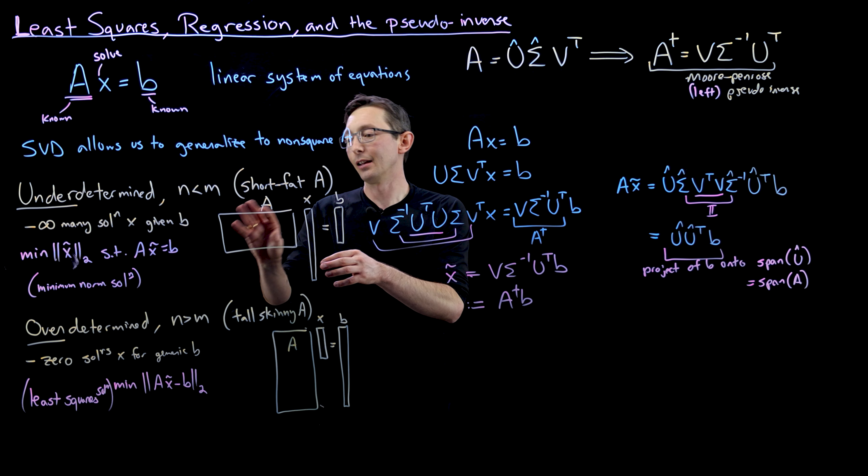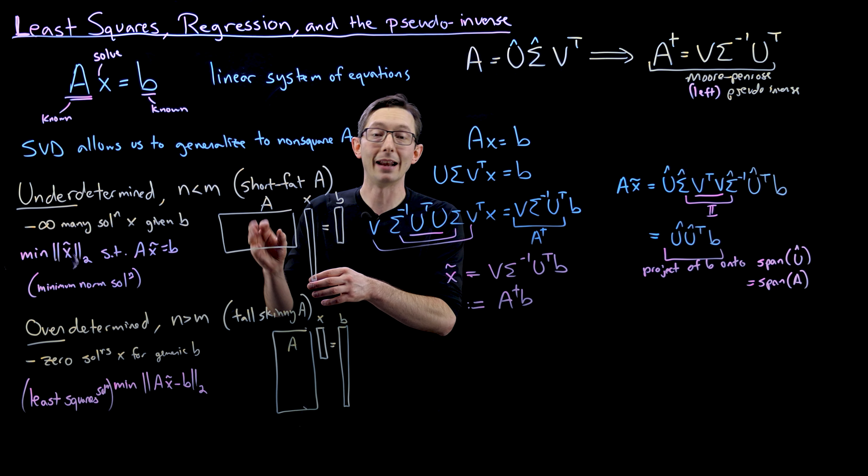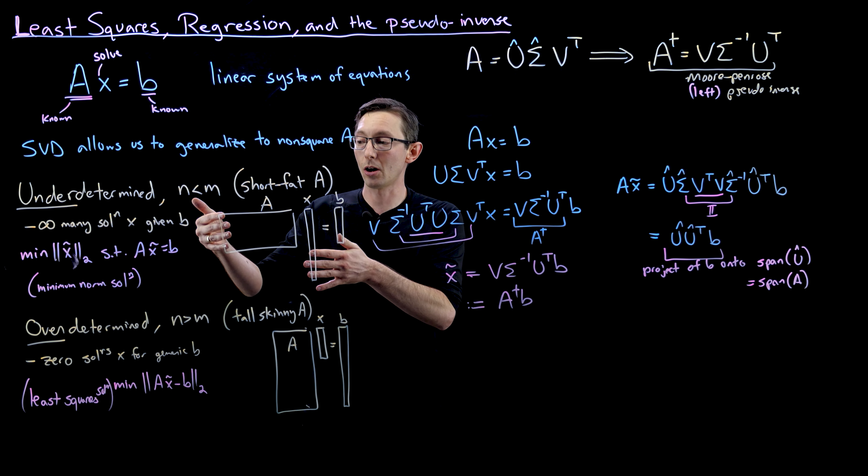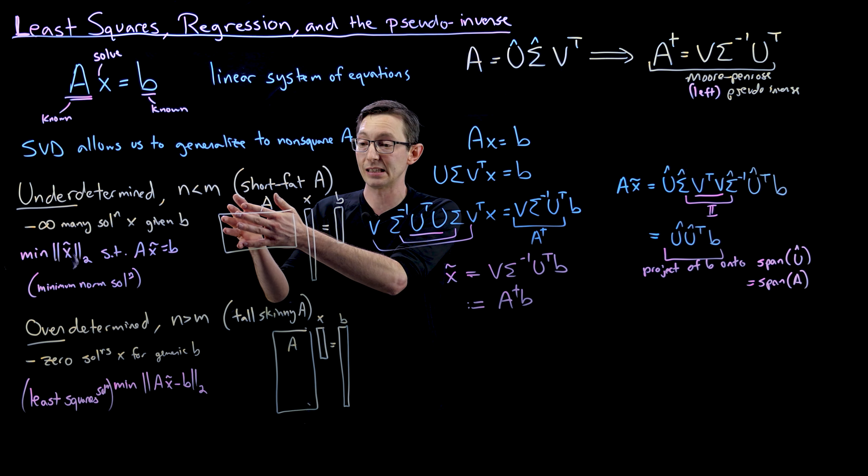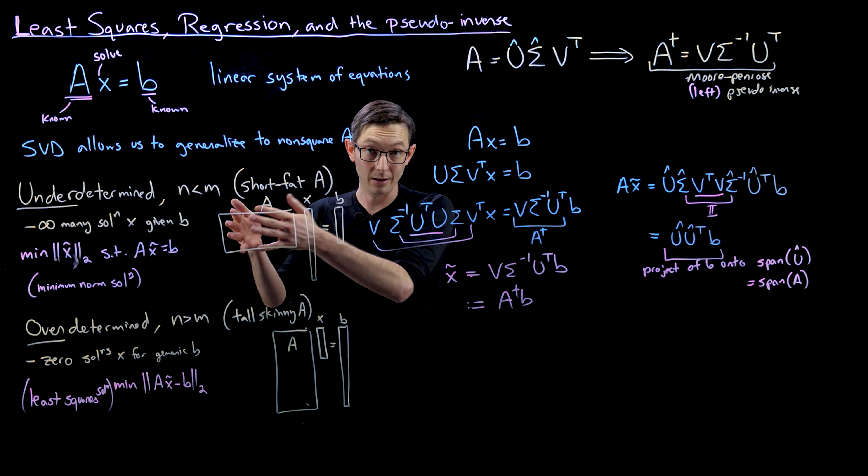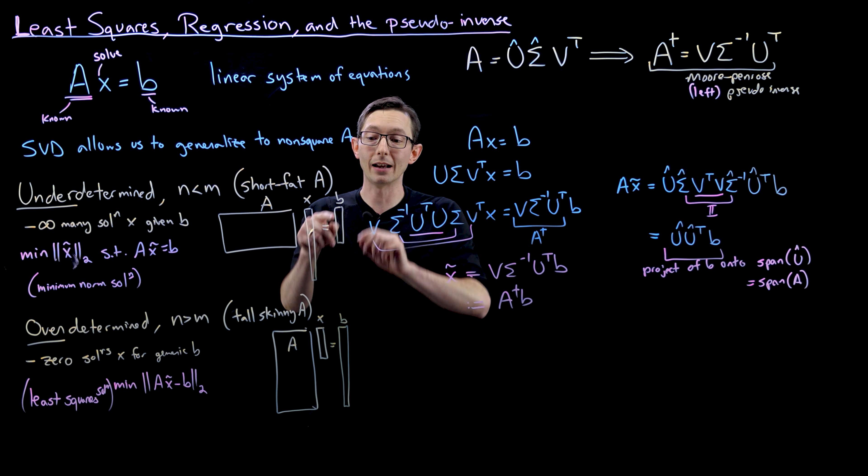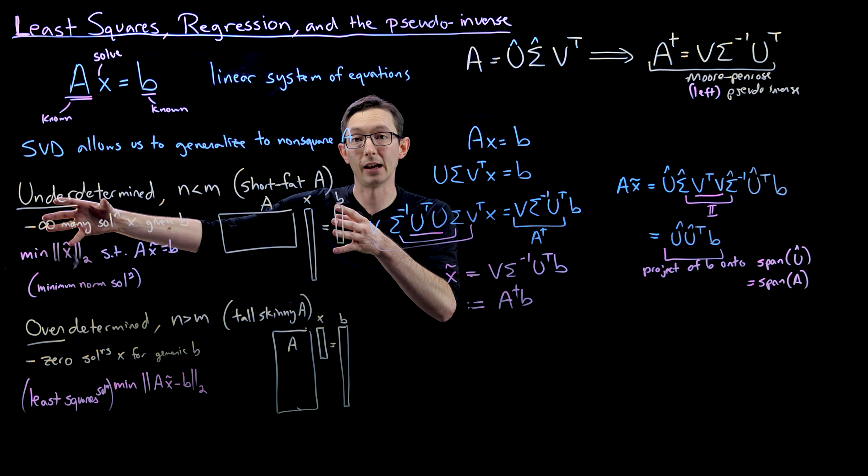And here, unless I pick a really bad A, this will actually be over-complete. There's more than enough columns in A to span all of RN. And so it's highly likely that B will be in that span of A in this underdetermined case.